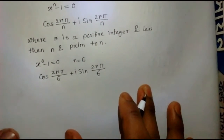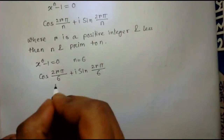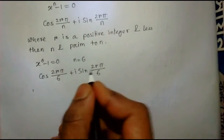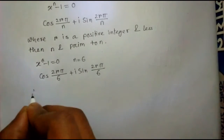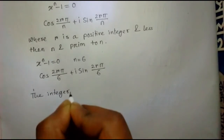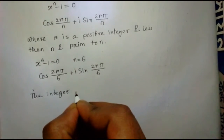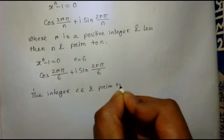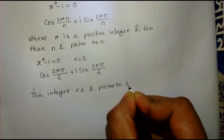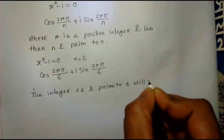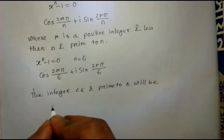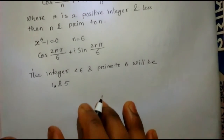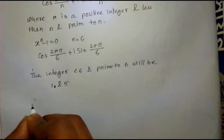Now we have to find r. We know that r is a positive integer, r is less than n, and prime to n. In this case, r is less than 6 and prime to 6. So 1 and 5 are less than 6 and also prime to 6. Therefore r equals 1 and 5.